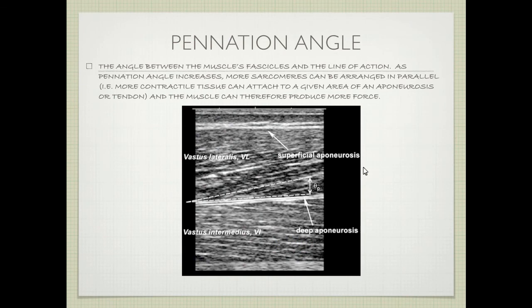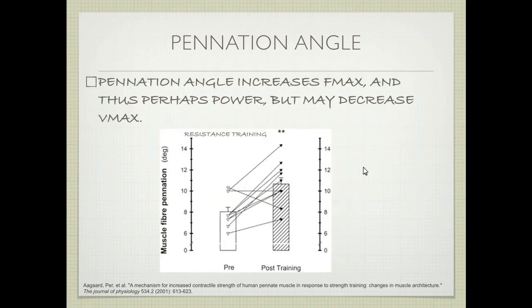Pennation angle refers to the angle of the fascicles relative to the connective tissue border or the deep aponeurosis. The greater that angle is, the more sarcomeres can be arranged in parallel, and therefore the greater the force output. Looking at the next slide, from pre-training to post-training, muscle fiber pennation angle increases. This increases power primarily via Fmax, but either doesn't change or slightly lowers Vmax. In general, however, power will go up.